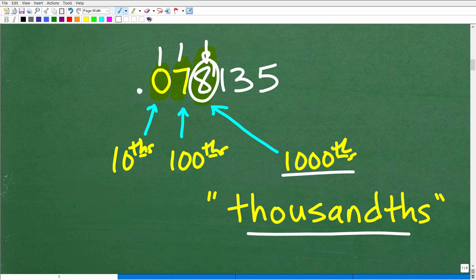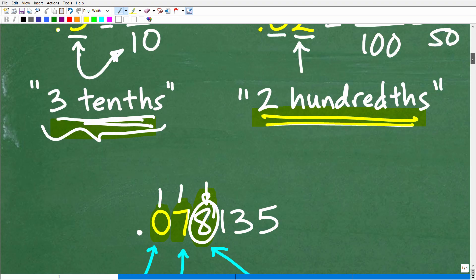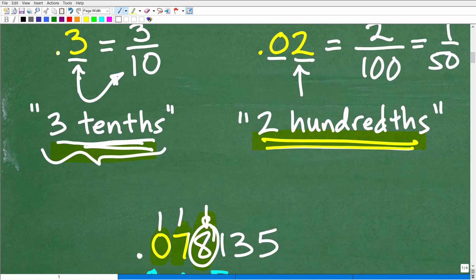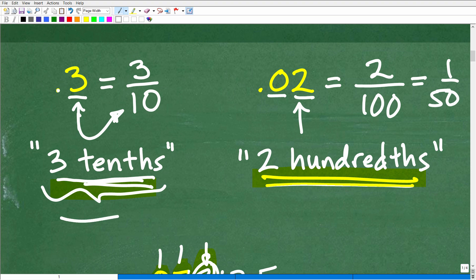Okay, so place value is very, very important for obvious reasons, right? If you need to convert a decimal to a fraction, you need to understand place value.